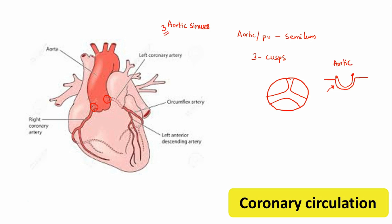These sinuses are named: one is the anterior aortic sinus, and the other two are the left posterior and the right posterior aortic sinuses. If you understand what the aortic sinus is, it becomes easy to understand the origin of the right and left coronary arteries.